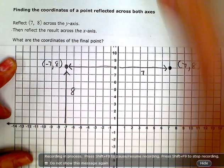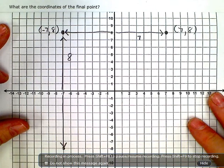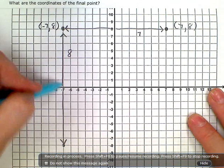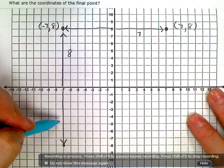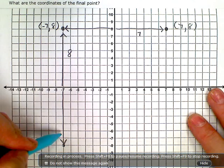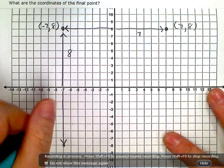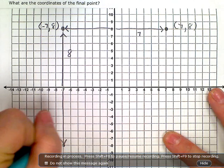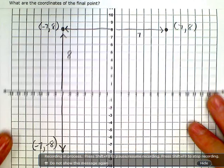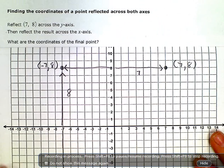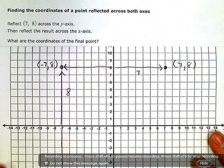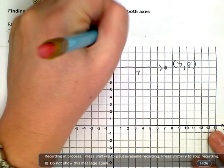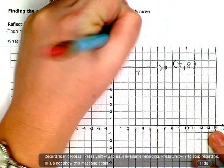Let me just move this up so you can see. Now instead of being 8 units this way, I'm flipping it over the x-axis and putting it 8 units down. So now my coordinates are (-7, -8). So up here, what are the coordinates of the final point? After doing both reflections, I would write (-7, -8).